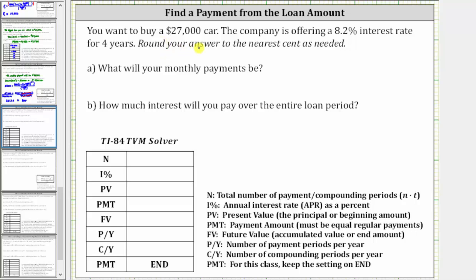You want to buy a $27,000 car, and the company is offering an 8.2% interest rate for four years. What will your monthly payments be and how much interest will you pay over the entire loan period? We are also told to round to the nearest cent.